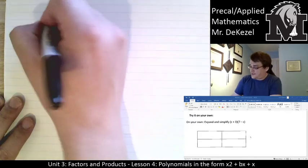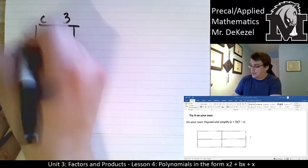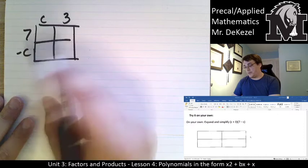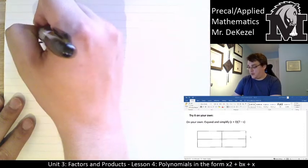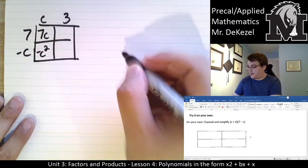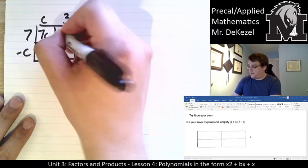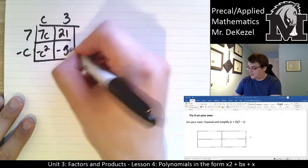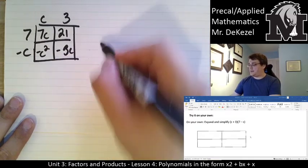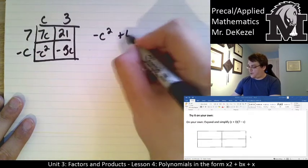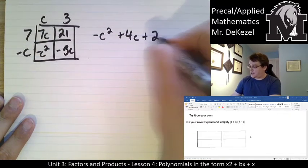We have c and 3, 7 and minus c. Everything can be multiplied by everything, so it doesn't really matter the order. Here, 7c minus c squared, 7 times 3 is 21, and 3 times minus c is minus 3c. I see I've got negative c squared, 7c minus 3, that's 4c plus 21.